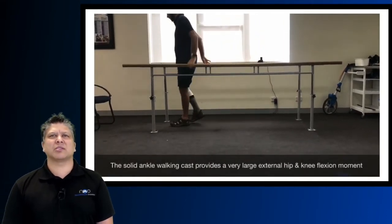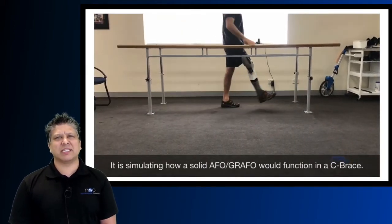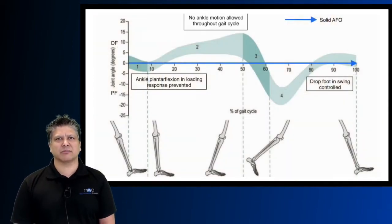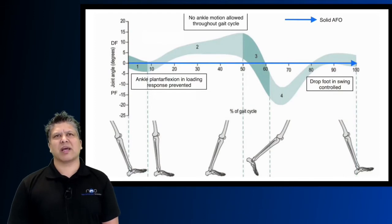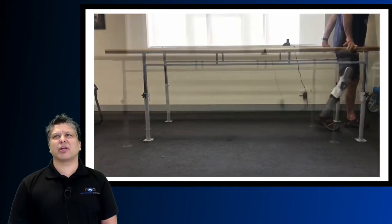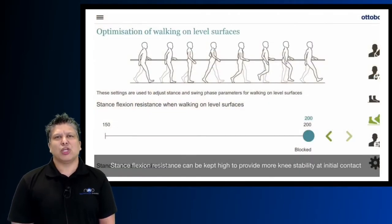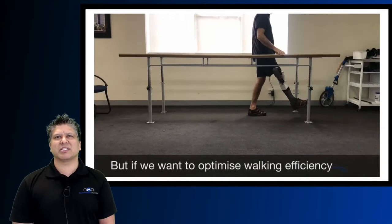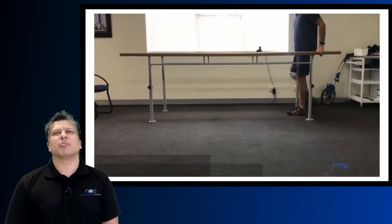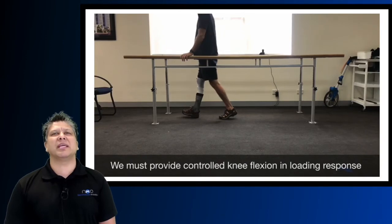The solid ankle walking cast provides a very large knee and hip flexion moment, simulating how a solid AFO and GRAFO would function in a C-Brace. The solid AFO doesn't allow any ankle motion during the gait cycle. At initial contact the ground force passes anterior to the hip joint and Jonathan needs to fire whatever available hip extensors he has. You can assist him by keeping stance flexion resistance high to minimise knee flexion collapse in loading response. But to optimise walking efficiency, the C-Brace allows approximately 20 degrees of knee flexion, as a human knee does during that period of gait.